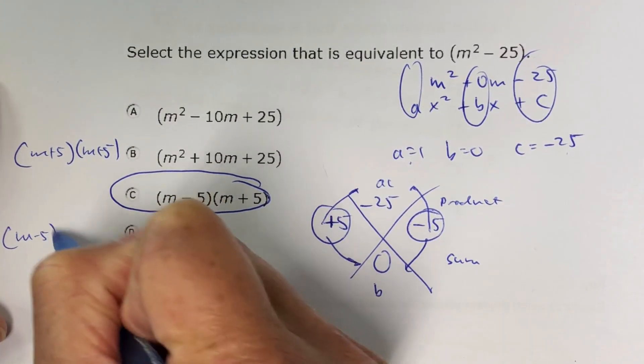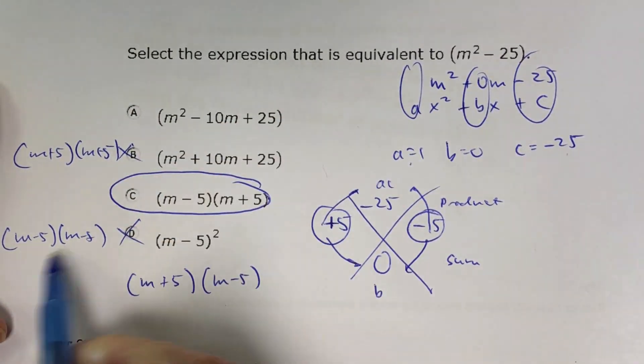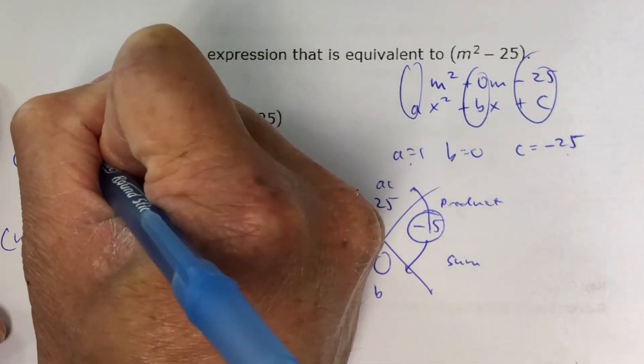This one is just m minus 5, m minus 5. There's two of them, they put them together, that would be incorrect. And if you actually multiply those out, that would be the same one as this one up here.